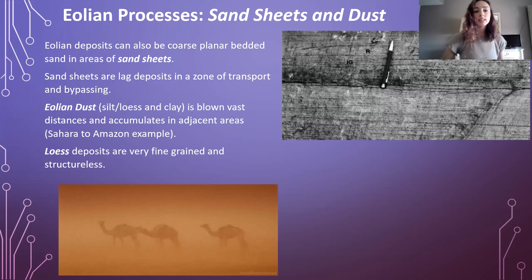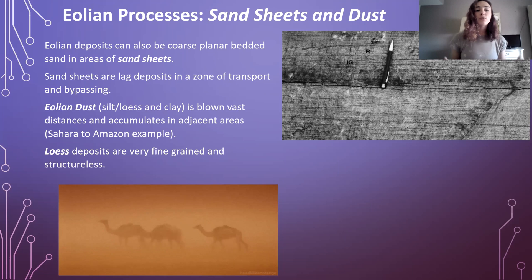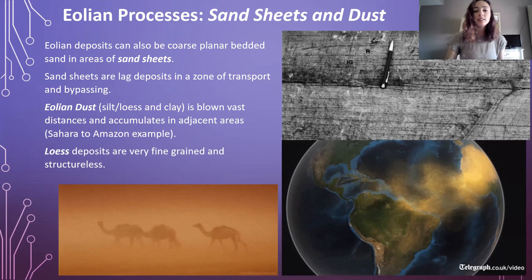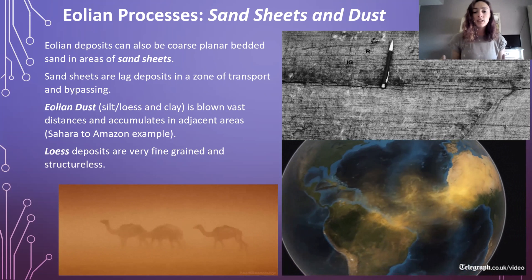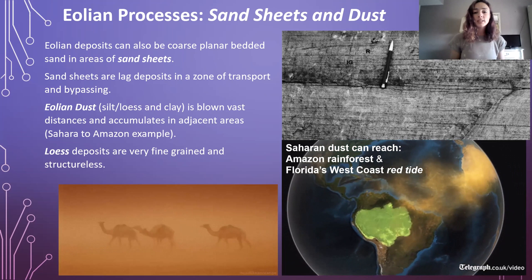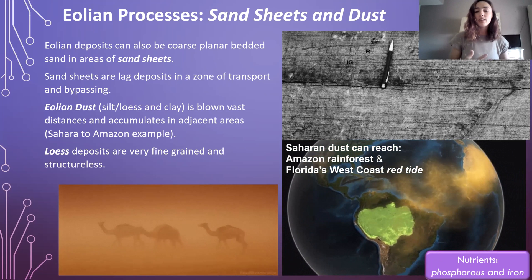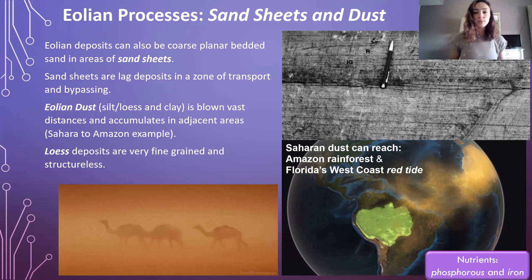We also have aeolian dust, which is typically silt-sized and is called loess. This aeolian dust, or loess, can be deposited in very fine structureless deposits, but it can also be blown over vast distances and accumulate in adjacent or far-away areas. It's really dependent on the Coriolis effect, global wind patterns, and how much loess is available to be transported. For example, in the Saharan desert, we have incredible dust transport from the Sahara to the Amazon rainforest, as well as to Florida's west coast, causing the red tide. Nutrients in the dust, like phosphorus and iron, can cause increased biological productivity, helping the growth of the Amazon forest but also causing the red tide, an algal bloom that can be detrimental to the health of that environment.